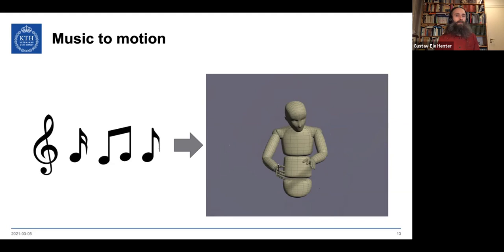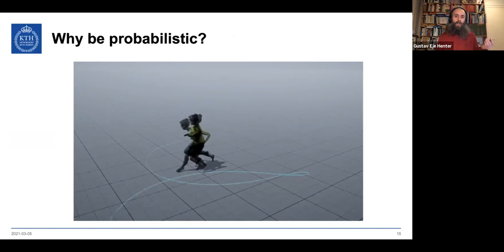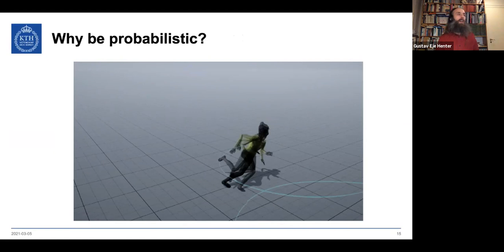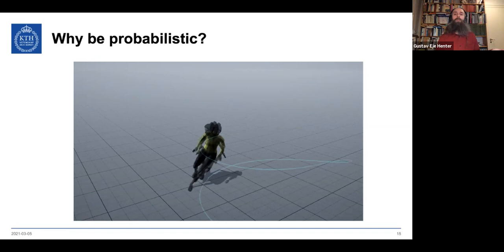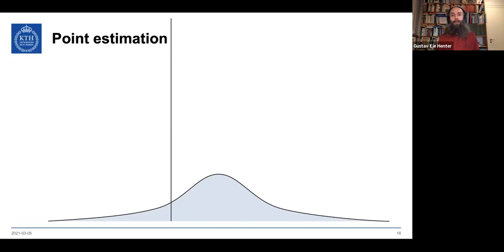Those were all examples generated by our methods. Now let's look at probabilistic models — why do we want to be probabilistic when describing motion? It's because there's no one true way to move. If you ask somebody to move in the same way, it's never going to come out the same way twice. We want to capture that, so let's assume there's some distribution to reality.